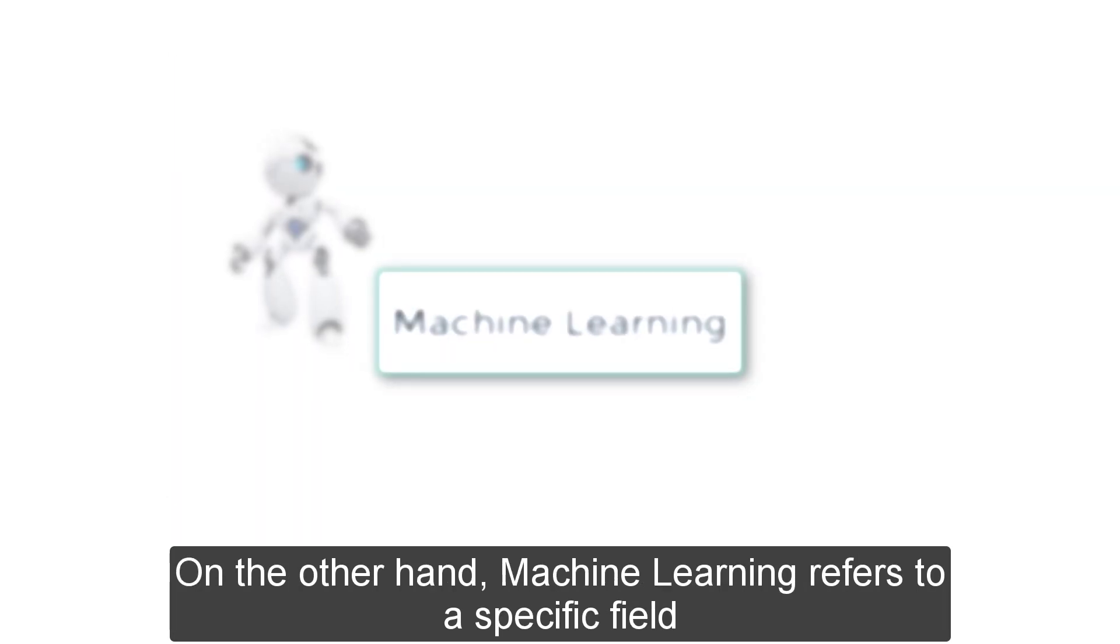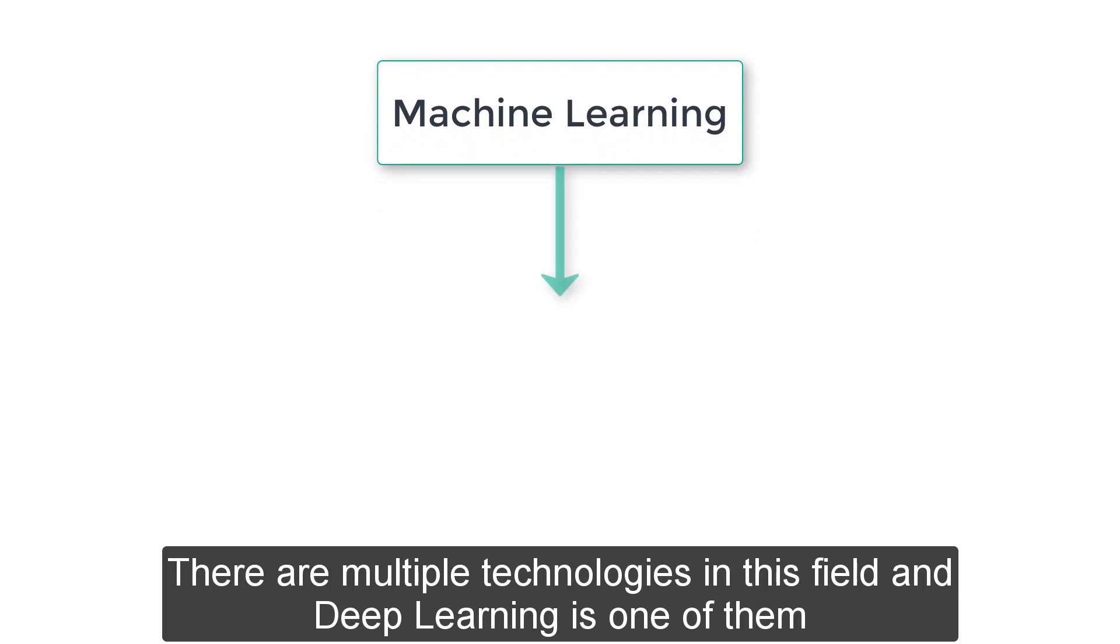On the other hand, machine learning refers to a specific field. There are multiple technologies in this field, and deep learning is one of them.